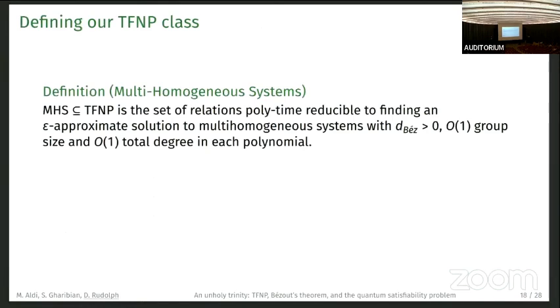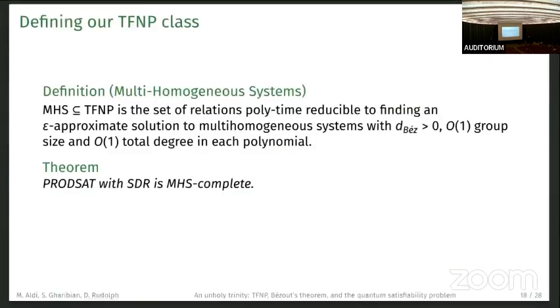What is our TFNP class? We define MHS, the set of relations that can be polytime reduced to finding an approximate solution to a multi-homogeneous system with positive Bézout number. We restrict ourselves to constant group size and constant total degree in each polynomial. It's quite restrictive, but was needed for the reduction.